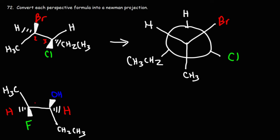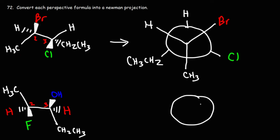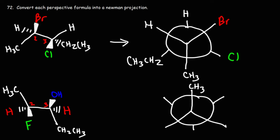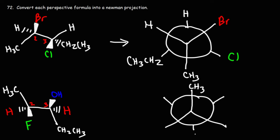Now let's focus on the next one. Here's carbon 2, here's carbon 3. Notice that the methyl group is on top as opposed to being on the bottom, so we're going to draw the other version of the Newman projection. The methyl group, instead of going down, it's going to go up. The methyl group and the ethyl group are anti with each other, so if the methyl is going up, the ethyl group is going to be going down on carbon 3.